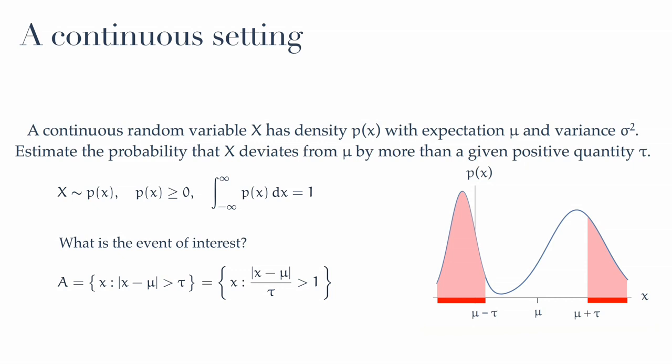So this is equal to saying that the square of that inequality is also true. In other words, A comprises all those points x for which the square of x minus mu divided by tau squared exceeds 1.